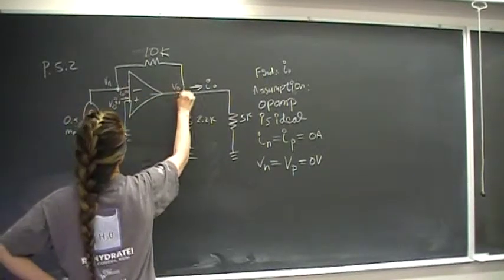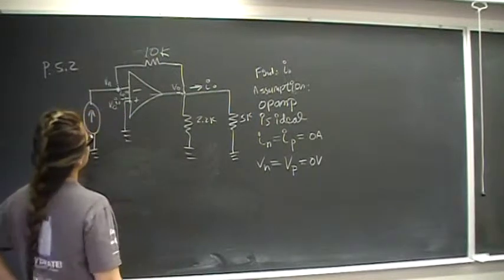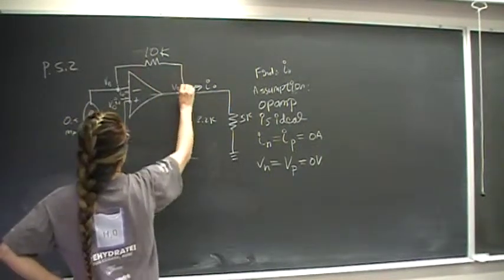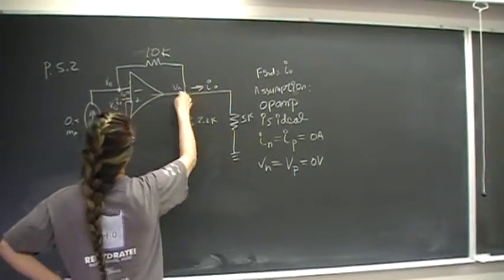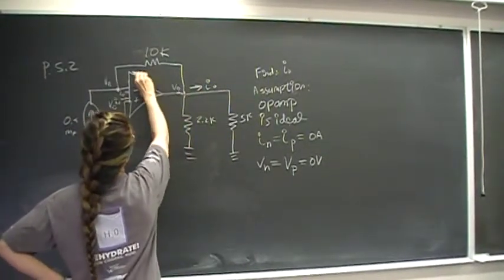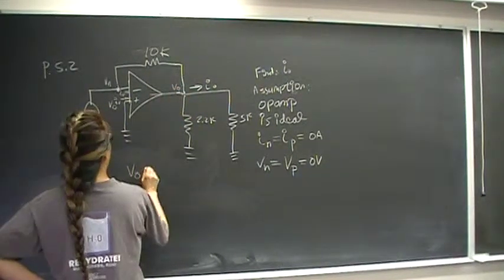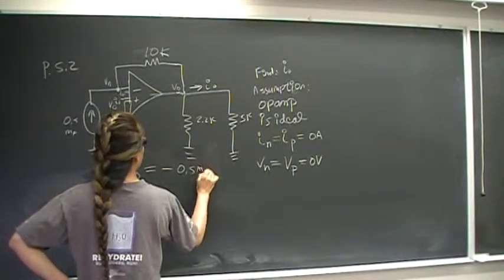And the voltage drop here is just going to be the current times, that's just Ohm's law, V equals IR. Now the current is going into the node. So since current is assumed to be leaving a node as positive, by the passive sign convention, it's going into the node, it will be a negative current. So V out is equal to negative 0.5 milliamps.